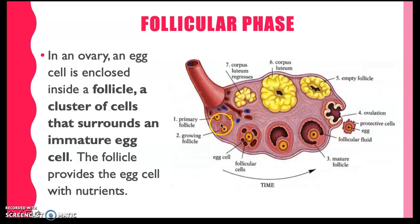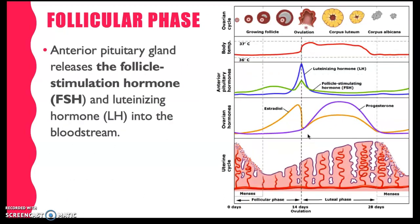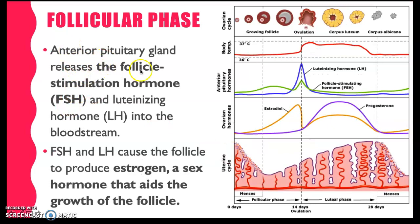It's a long stage — it takes about 2 weeks, from day 1 to day 14, to grow and to mature. Look at this picture; this is the mature follicle. During the follicular phase, the anterior pituitary gland releases the follicle-stimulating hormone. That's why it's called follicle-stimulating hormone — because of the function of the follicular cells, which is to produce their own hormone, estrogen, a sex hormone that aids in the growth of the follicle.